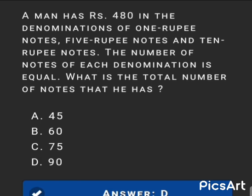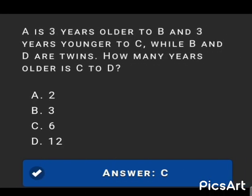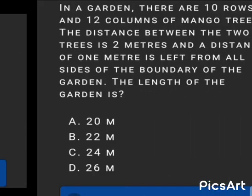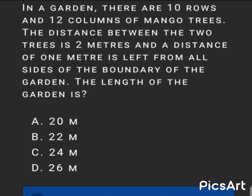Next MCQ: A is three years older than B, and B is three years younger than C, while B and D are twins. How many years older is C than D? The answer is option C: 6.